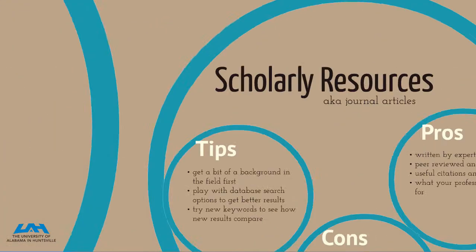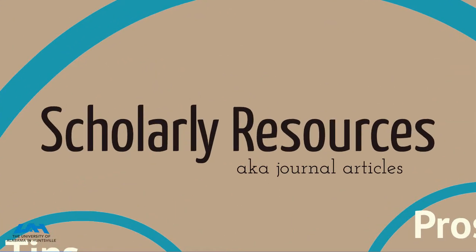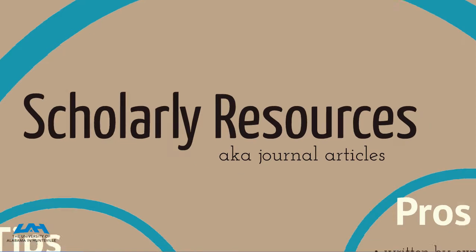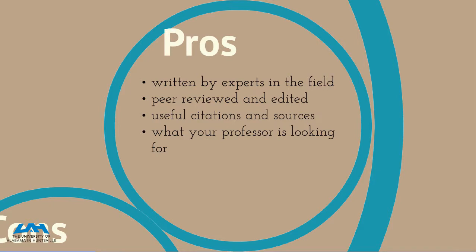The first type we're going to take a look at is the scholarly resource — the journal article. The benefits of the scholarly resource are they're written by experts in the field, they're peer-reviewed and edited, they have useful citations and sources, and you know exactly where the data is coming from. For most of you, this is exactly what your professor is looking for.